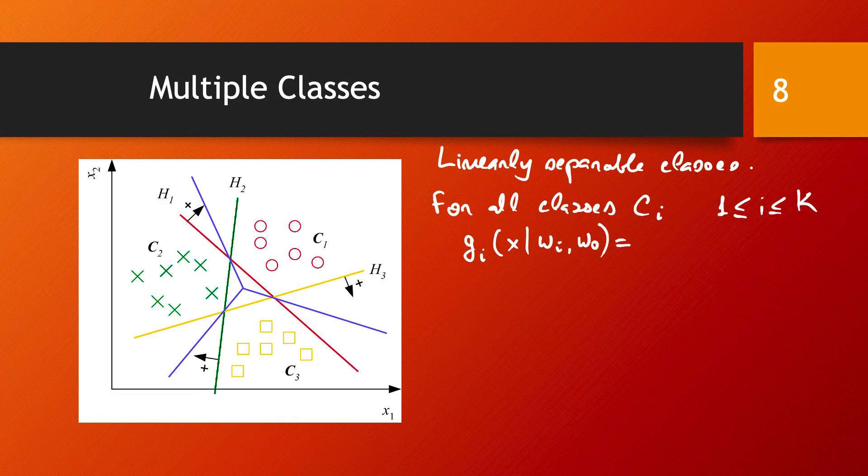And the form of these functions is going to be linear in x with the weight vector being wi and this free term being wi0, just to make the point that this is going to be different for each class CI.